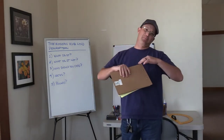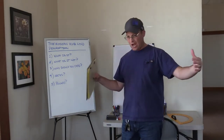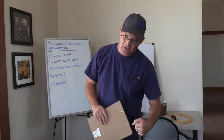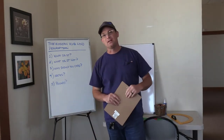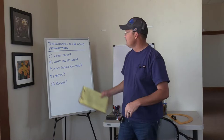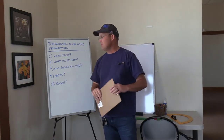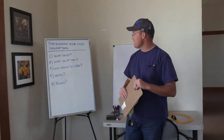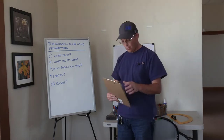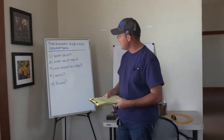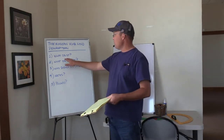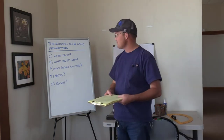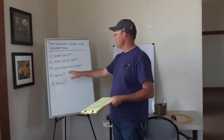That's a pretty broad topic — writing legal descriptions — so I wanted to narrow that down a little bit. What I'm going to focus on today is writing what I call the modern metes and bounds land description. So what we're going to cover is: what is that, what's the definition of a modern metes and bounds land description, and what is it not?